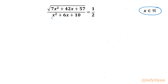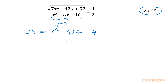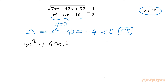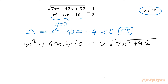Let's get started by writing that the denominator cannot be zero. If I check only the value of the discriminant for this quadratic denominator, it is b² - 4ac, so 6² - 40, which is negative 4. The conclusion is complex solutions will be there — there won't be any real solution for which the denominator will be zero. So I can simply cross multiply the terms: x² + 6x + 10 = 2 times square root of 7x² + 42x + 57.